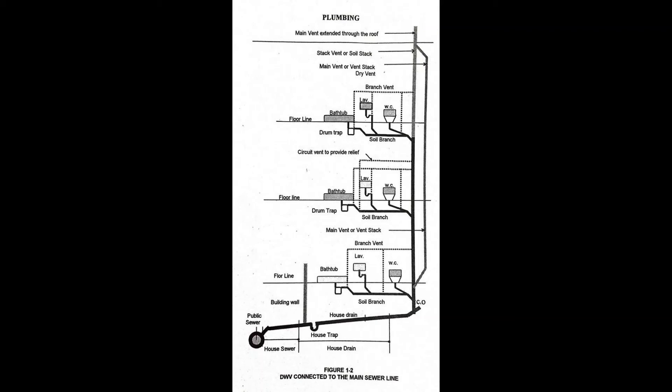Soil pipe is any pipe that conveys the discharge of water closets or fixtures having similar function, with or without the discharge from other fixtures to the building drain or building sewer.